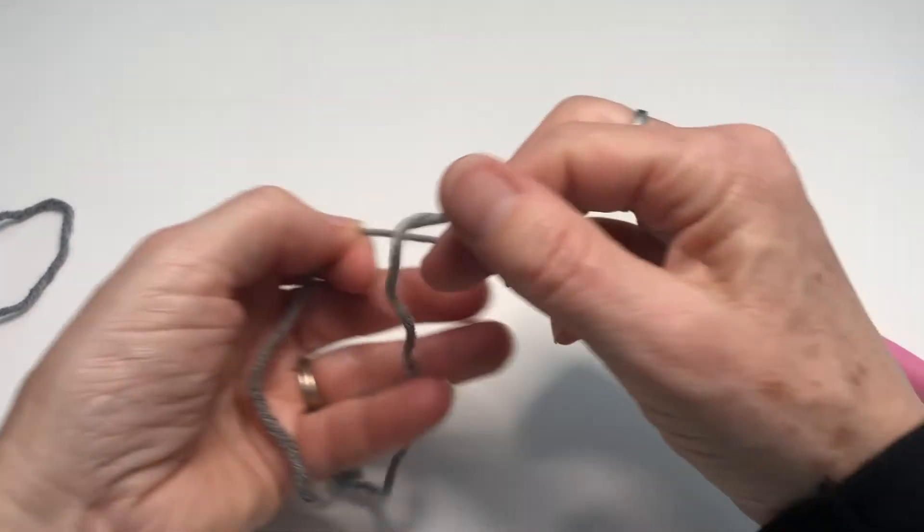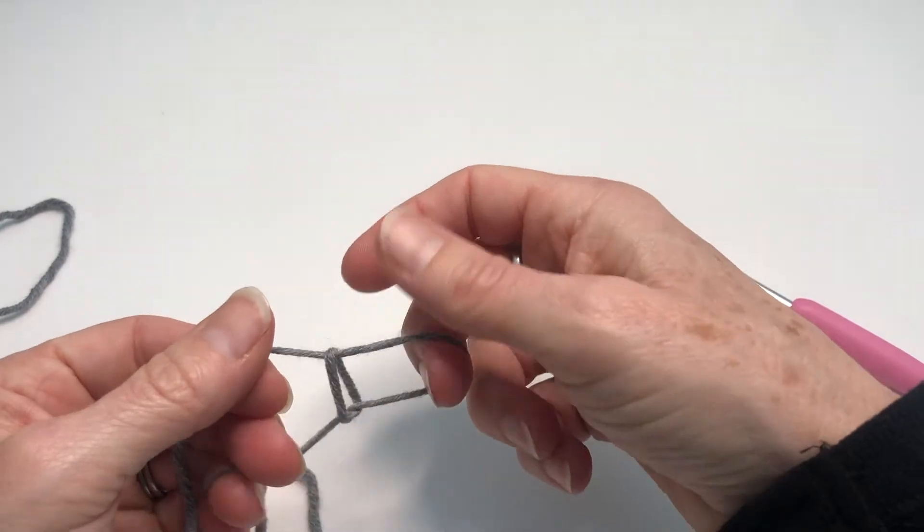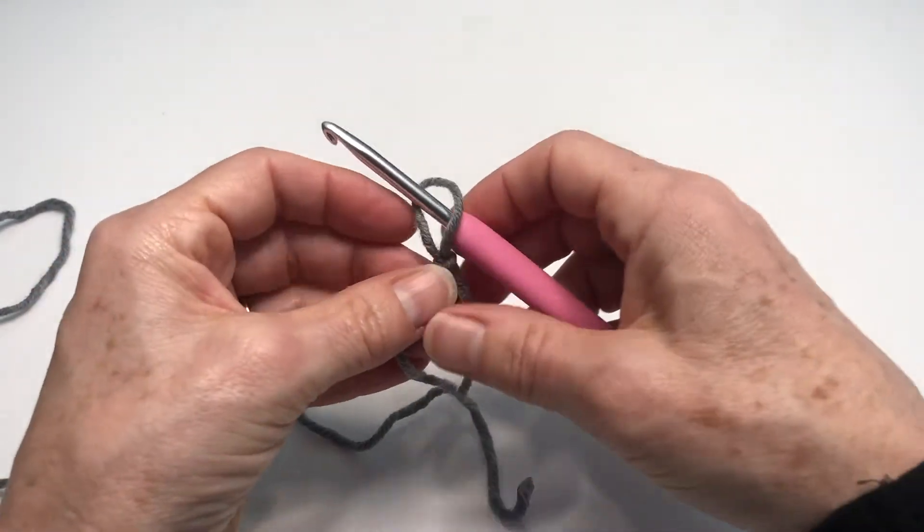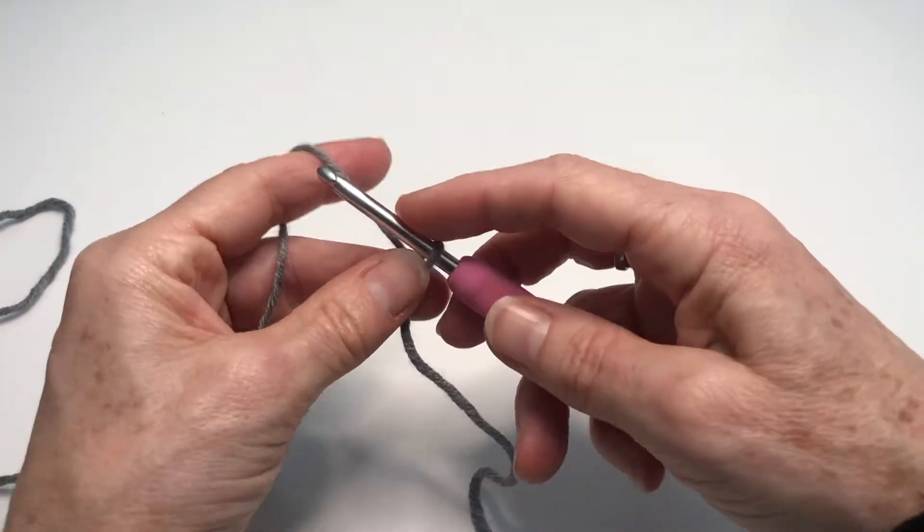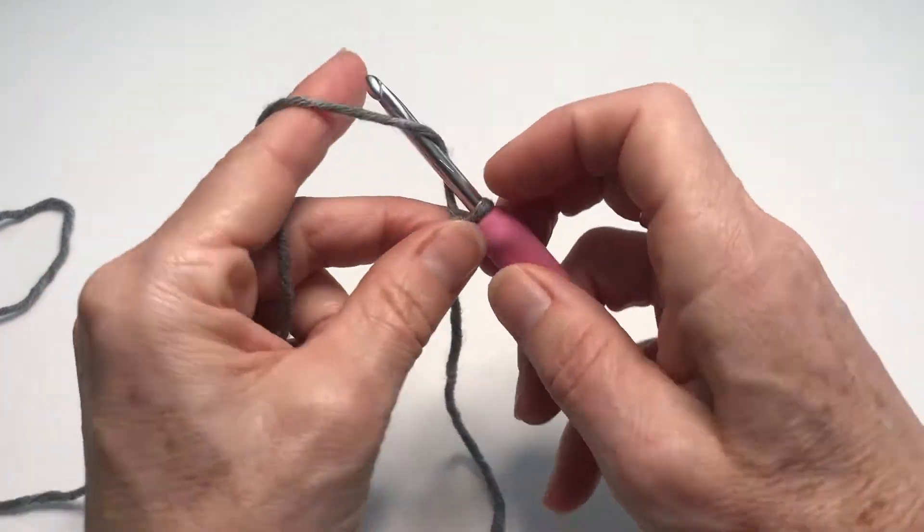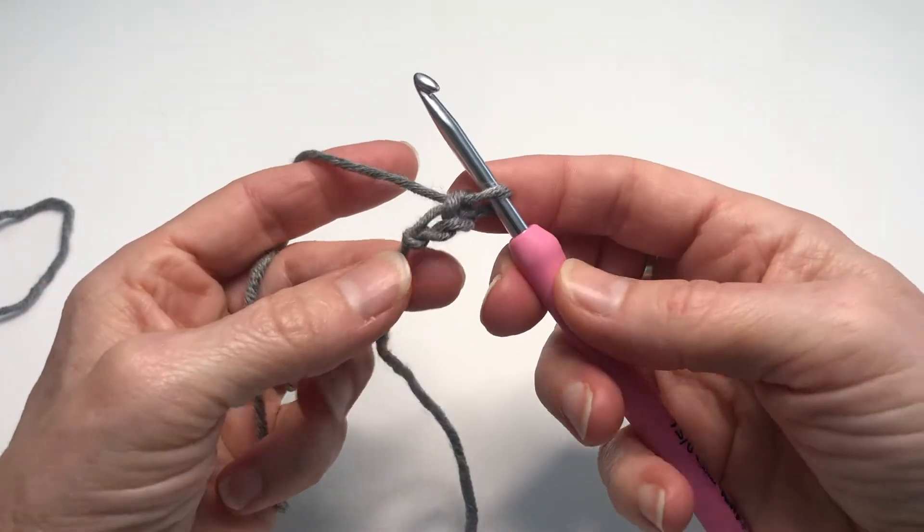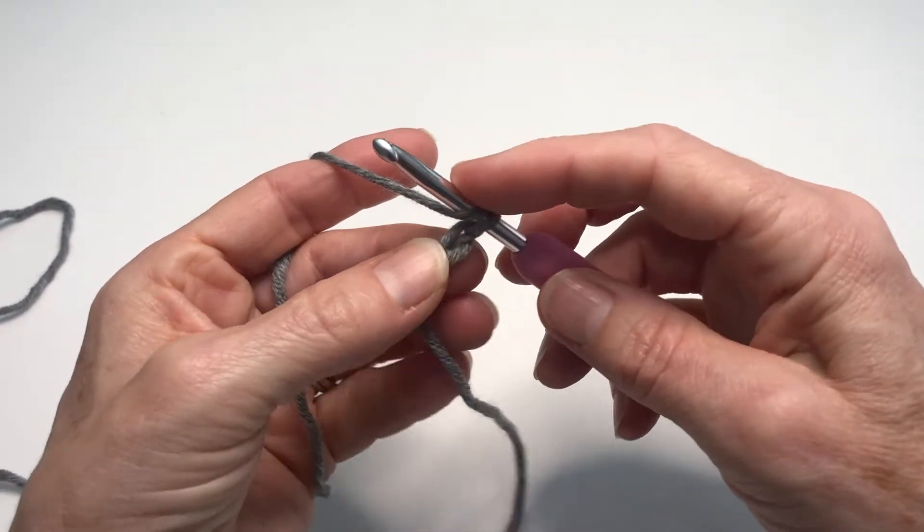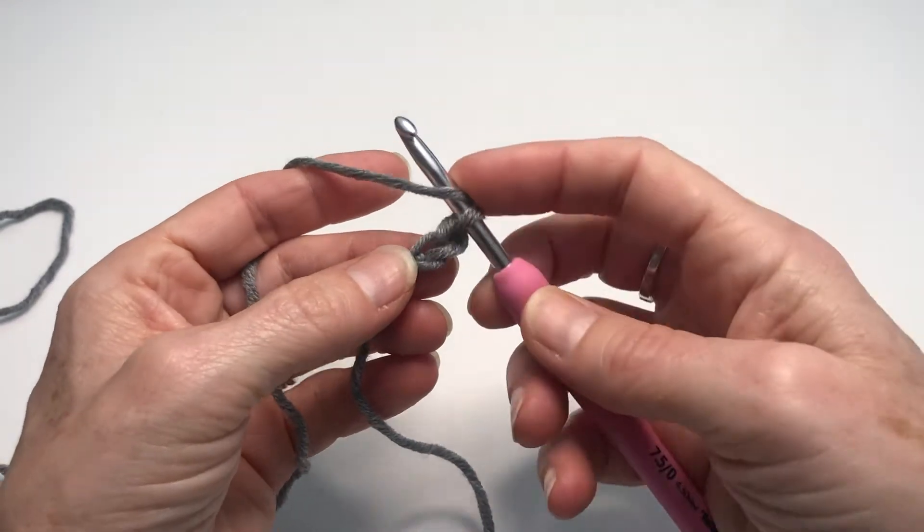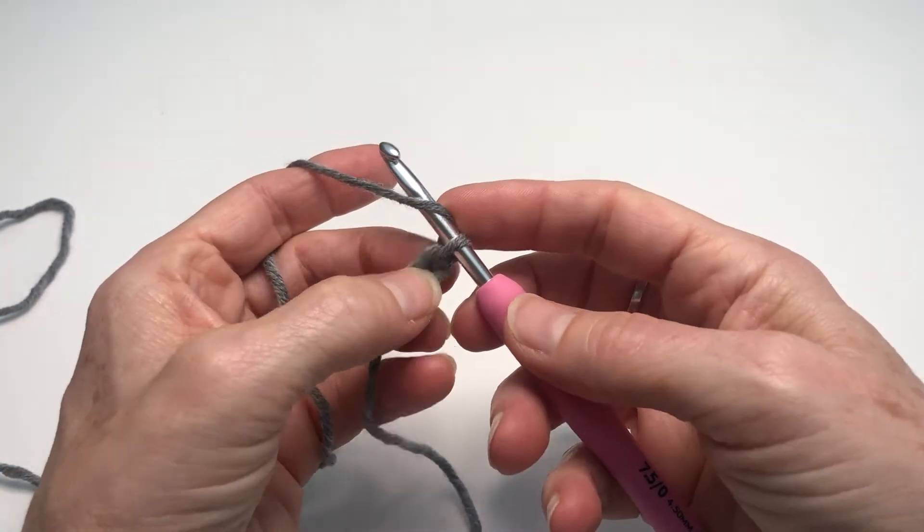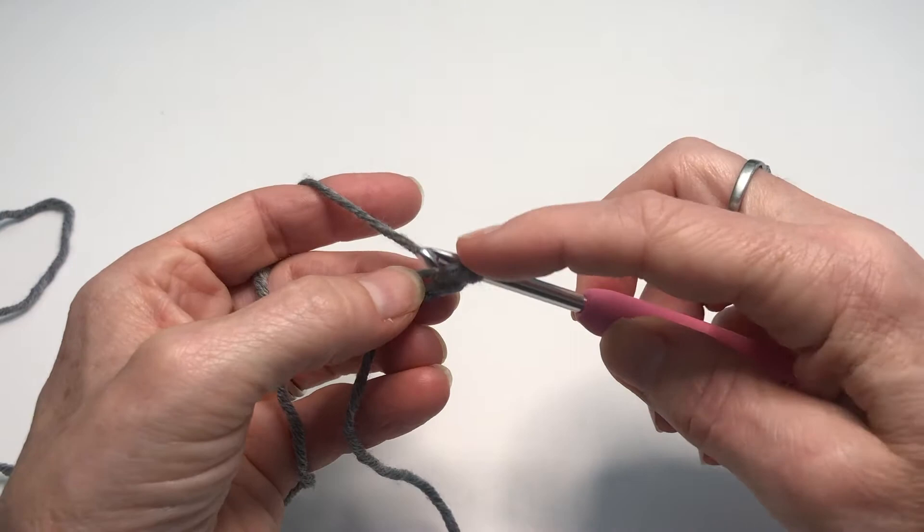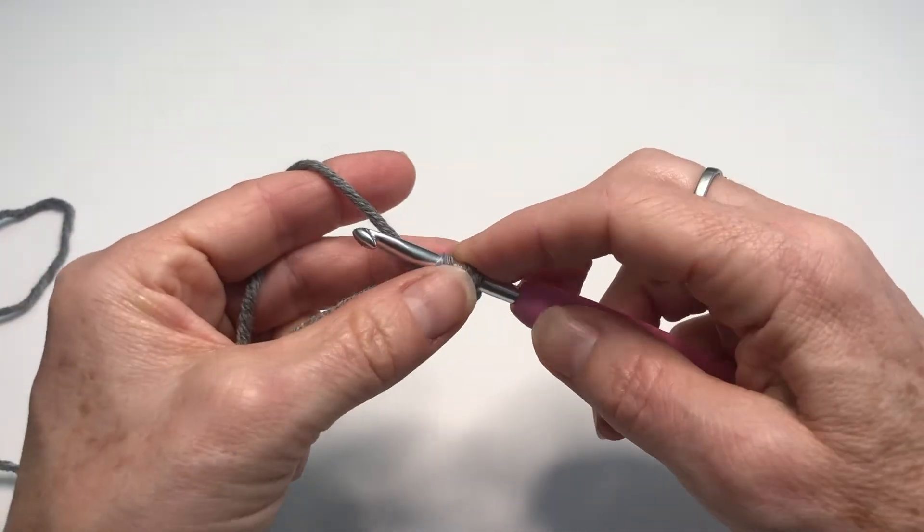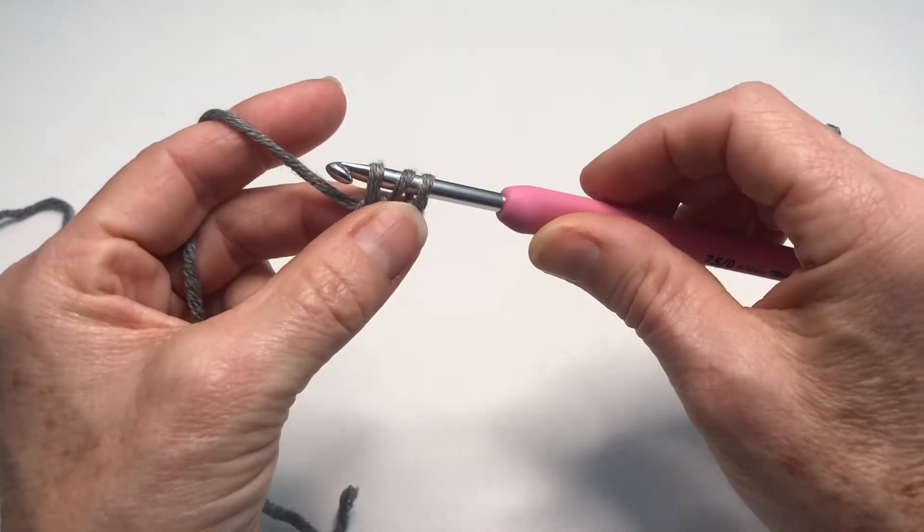the slip knot. Insert hook and chain two because it's a half treble crochet. Yarn over, insert your hook into this second chain from the hook, so one, two. Yarn over and pull through. We have three loops on